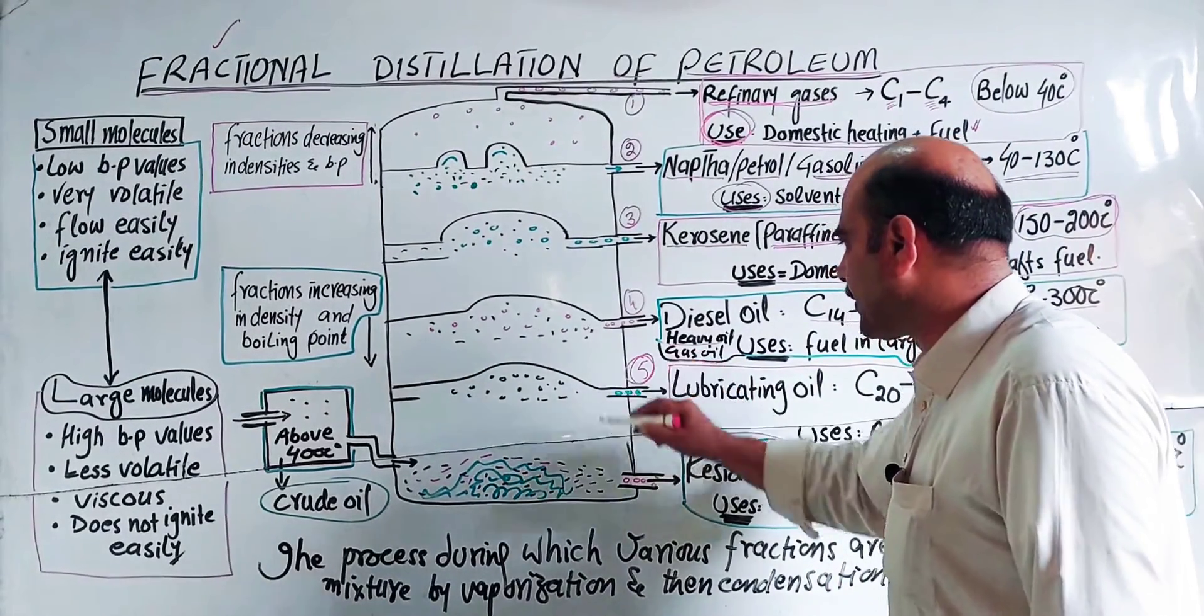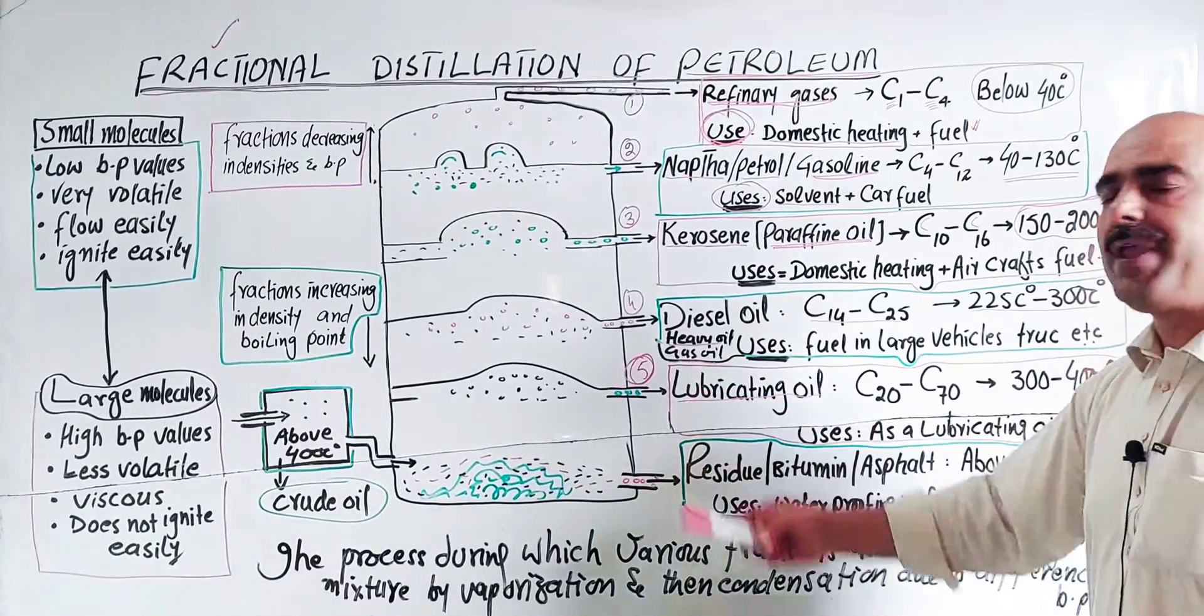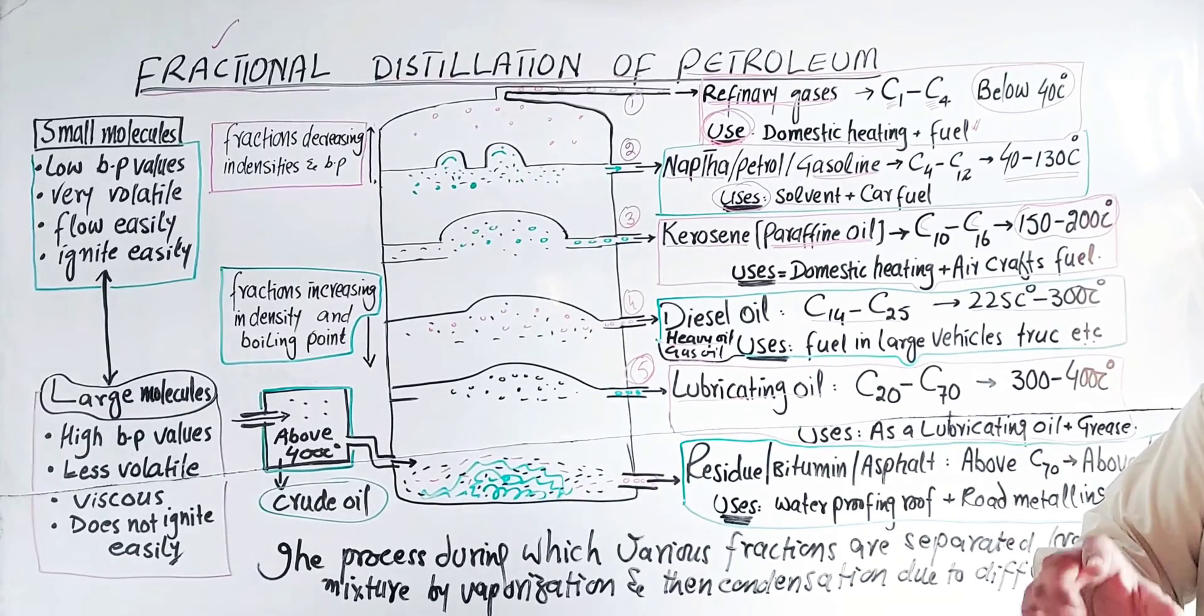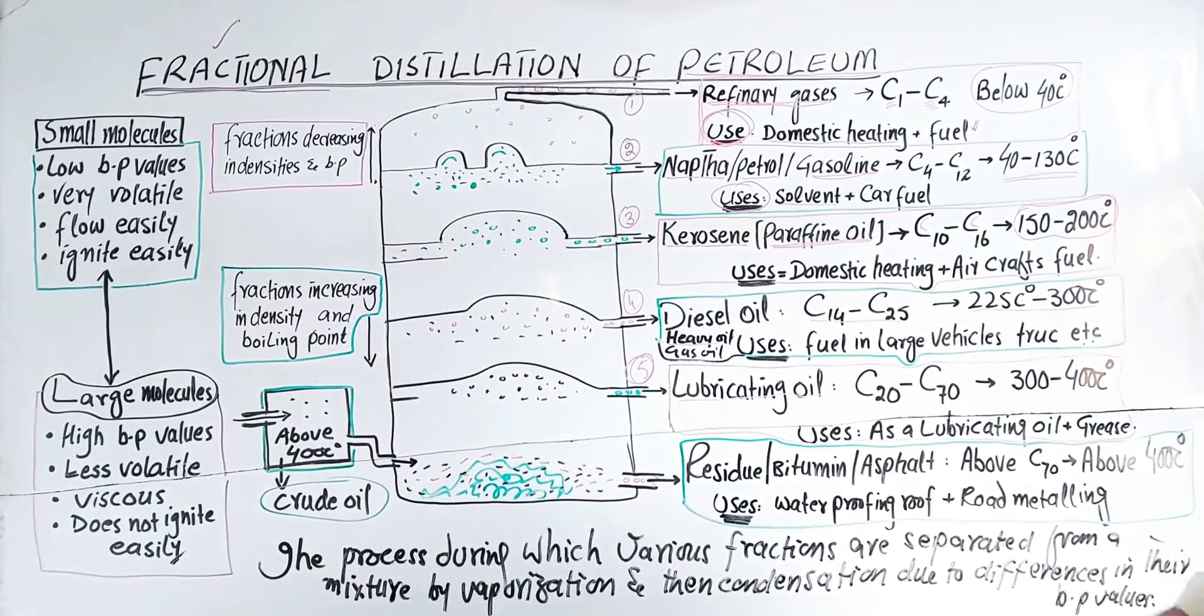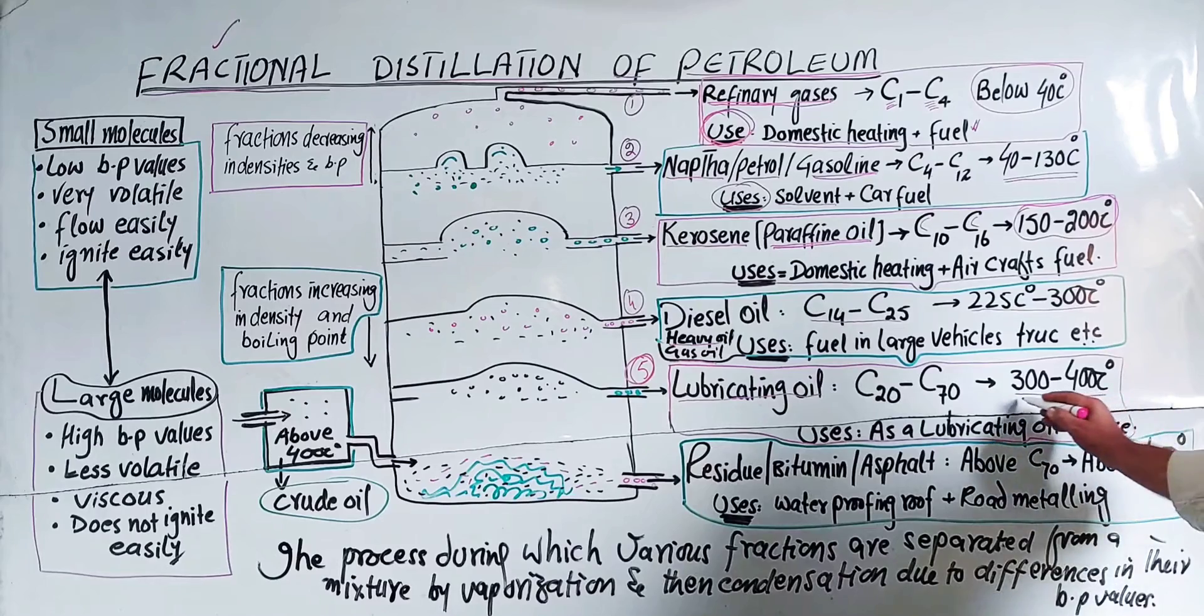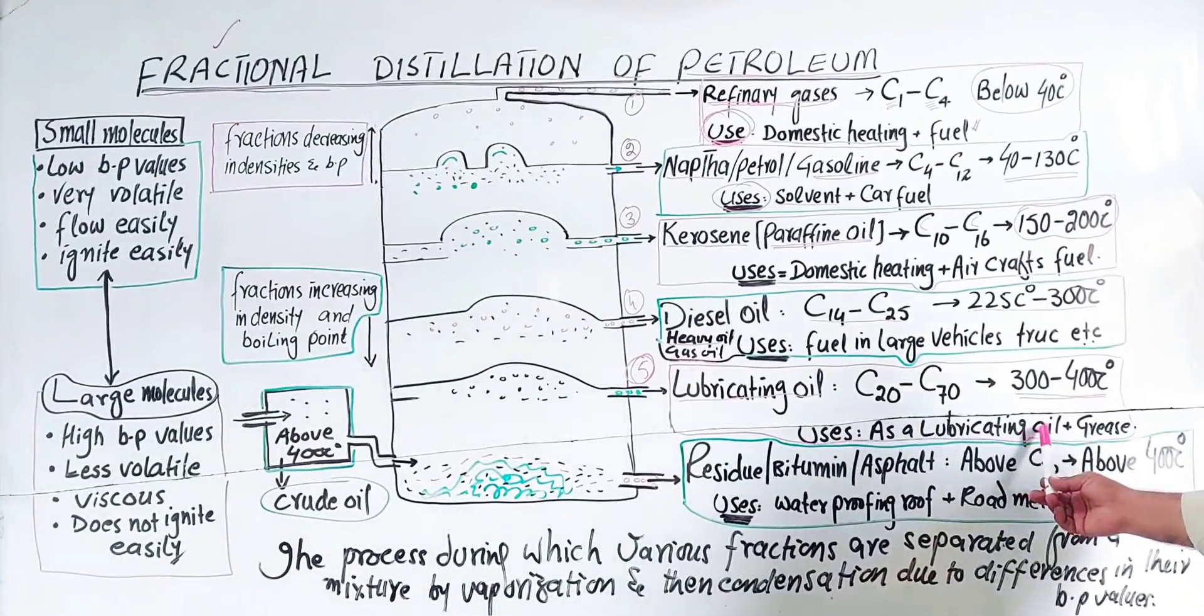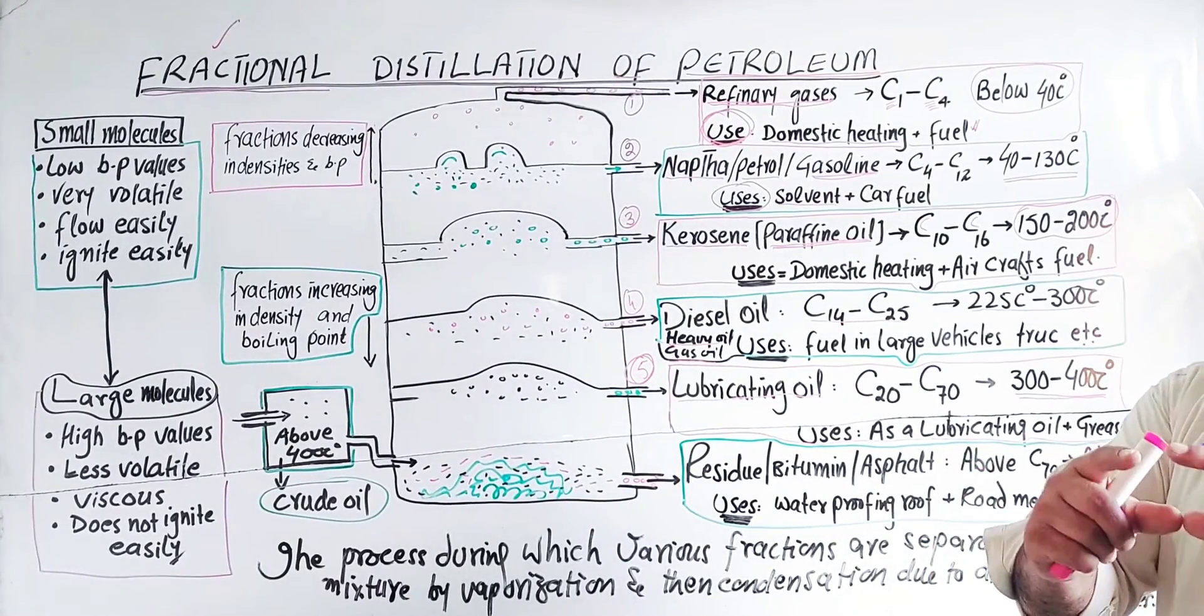Friction number five is lubricating oil. Lubricating oil reduces friction between moving parts of machines. It prevents wear on solid parts and reduces energy loss. Lubricating oil contains carbon-20 to carbon-70 molecules, with a temperature range above 300 degrees Celsius. High boiling point due to long chains. Uses include lubricating oil, grease, and candles or petroleum jelly for skin care.